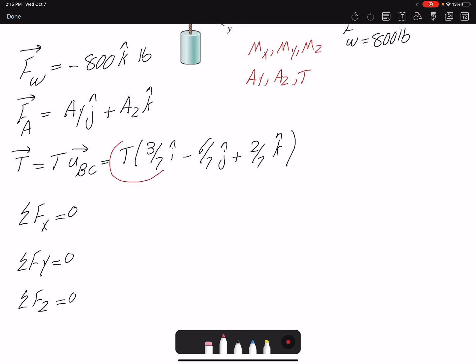For X I have this component and that's it. I don't have any other component. So 3 over 7 T is zero. That means that T is zero. So there is no tension in the rope.